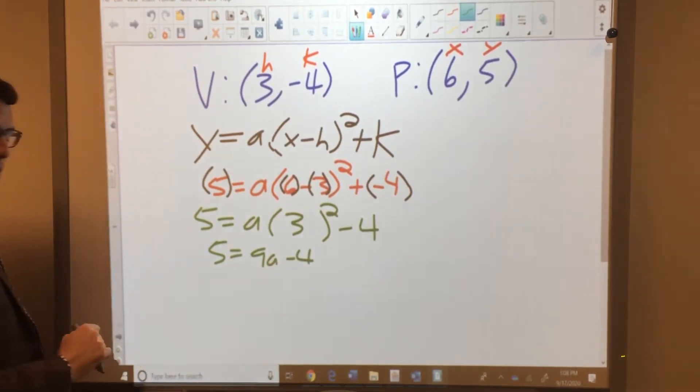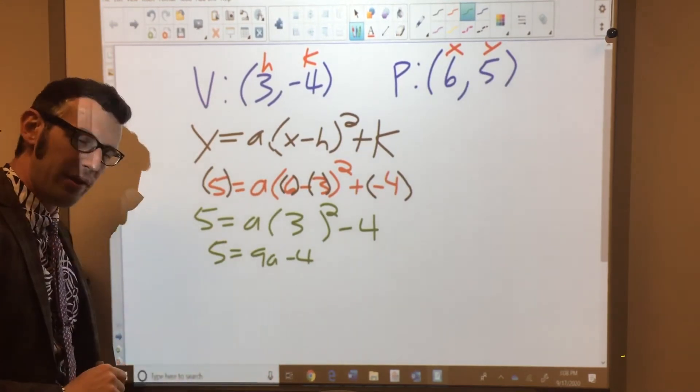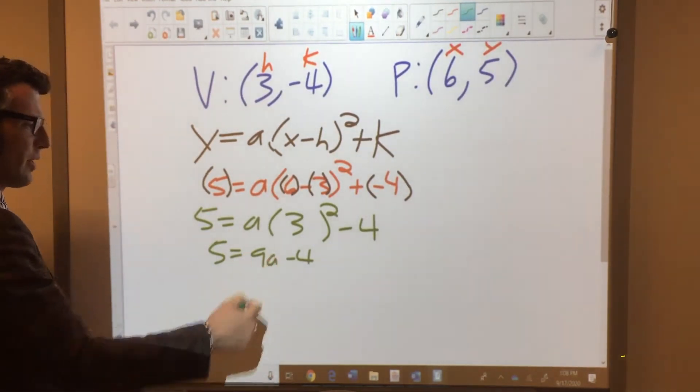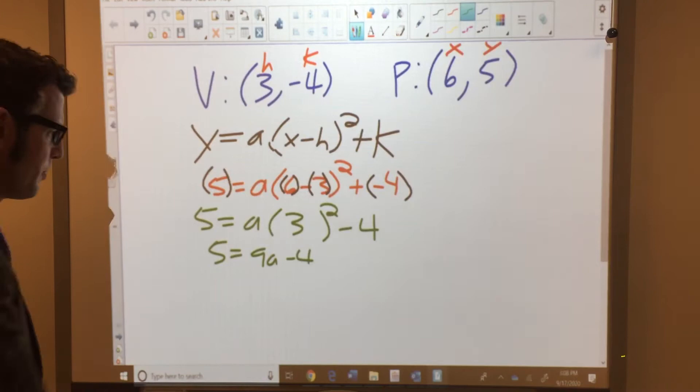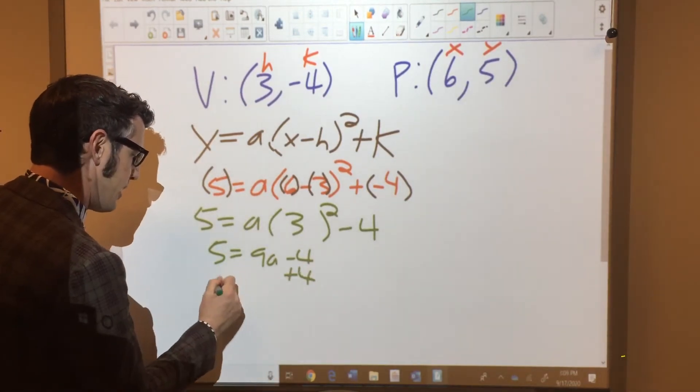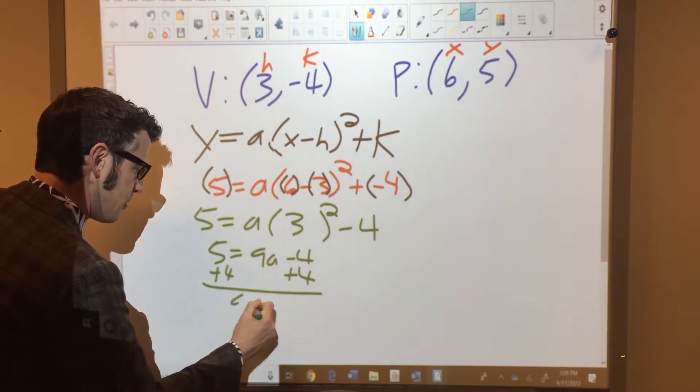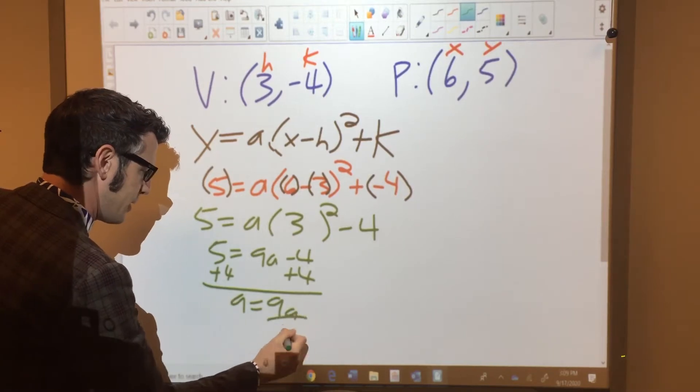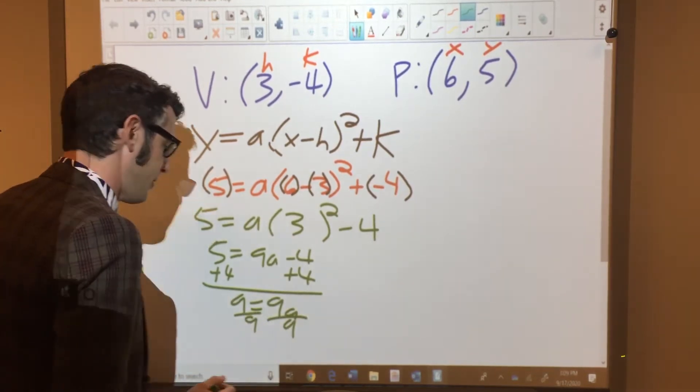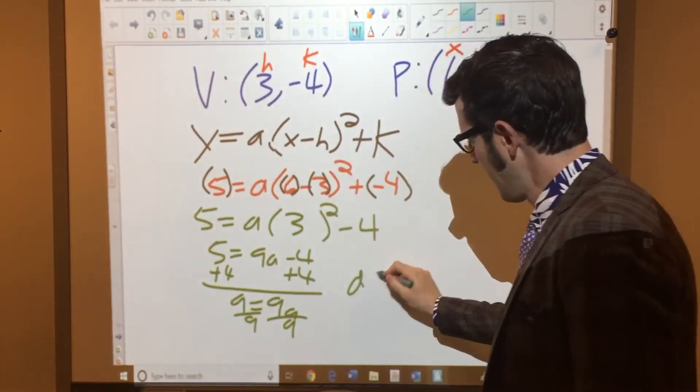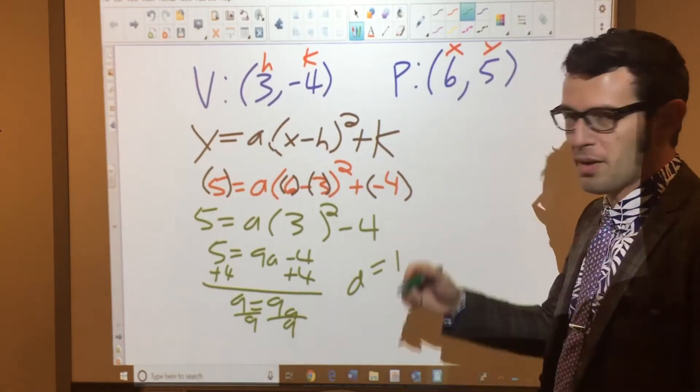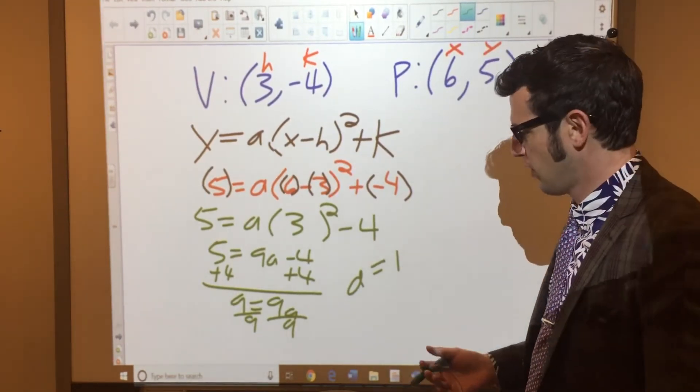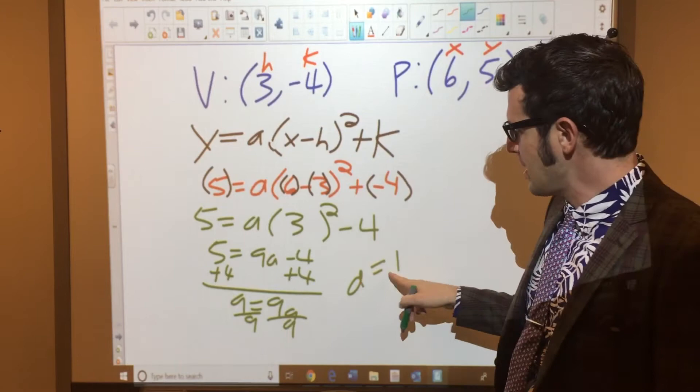So that ends up with 5 equals 9a minus 4. If I look at this now, I say, wait a second, this is algebra 1, or pre-algebra even. This is solving a two-step equation. Oh, simple stuff. Add 4 to both sides. 9 equals 9a. I'm going to pick these numbers at random and work out nicely. You might not always do that. You could end up with a fraction here for a. That's okay, too. There's nothing wrong with that. So we have a equals 1.